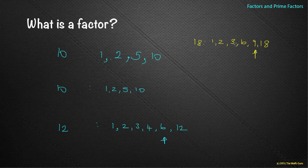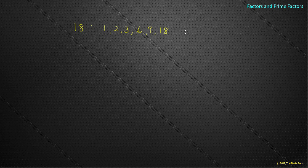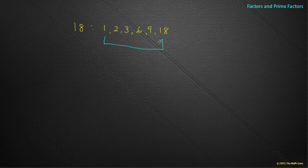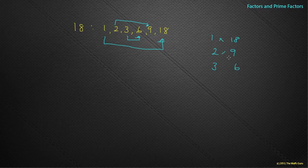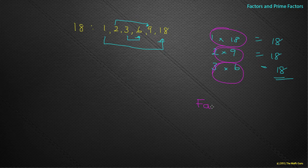Now I'm just counting through numbers in my head — but is there an easier way? Let's go back to eighteen. We had one, two, three, six, nine, and eighteen. If I look at these numbers, I notice I've got pairs: one and eighteen, two and nine, three and six. Put a times between each: one times eighteen is eighteen, two times nine is eighteen, three times six is eighteen. These are called factor pairs.